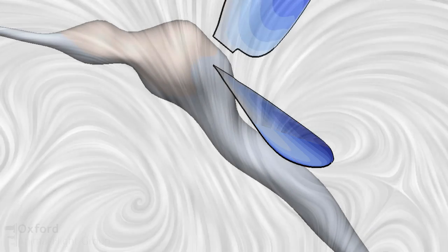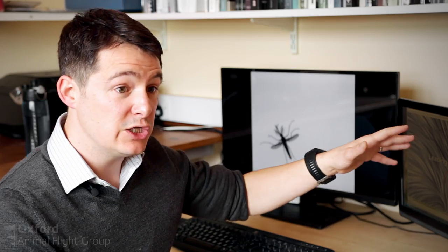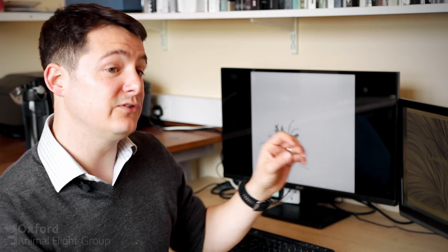And it's also a form of wake capture. Wake capture is a mechanism where an insect can make use of energy that's dissipated from a previous wing beat. So essentially it's a way of recycling air, and in doing so it can greatly increase the efficiency of the wing.